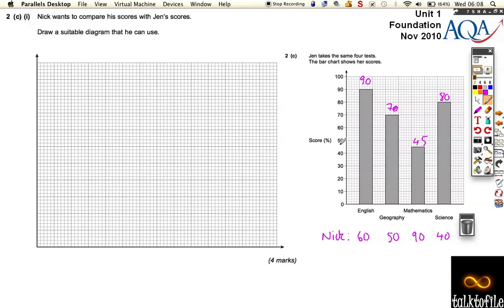So what we can draw is a dual bar chart. That means we're going to draw a bar chart of Nick and Jen next to each other. We're going to have the English results, Geography results, Maths results, Science results, but we're going to have two bars - one for Nick and one for Jen. Let's look at our scale and make it very similar.